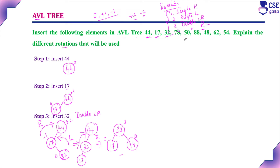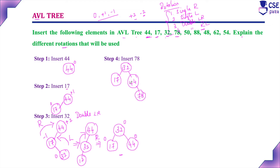Next step: insert 78. The current tree has 32 as root, 17 as left child, and 44 as right child. Since 78 is greater than 32, go right; greater than 44, so attach as right child of 44. Check balance factors: leaf nodes are 0; node 44 is 0 minus 1 = -1; node 32 is 1 minus 2 = -1. All factors are 0, +1, or -1, so it is a balanced AVL tree. No rotation needed.